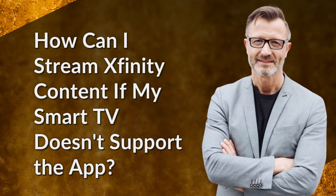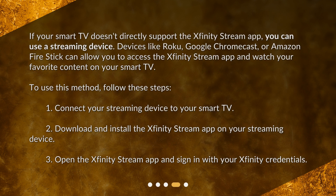How can I stream Xfinity content if my smart TV doesn't support the app? If your smart TV doesn't directly support the Xfinity Stream app, you can use a streaming device. Devices like Roku, Google Chromecast, or Amazon Firestick can allow you to access the Xfinity Stream app. To use this method, follow these steps: 1. Connect your streaming device to your smart TV. 2. Download and install the Xfinity Stream app on your streaming device. 3. Open the Xfinity Stream app and sign in with your Xfinity credentials.